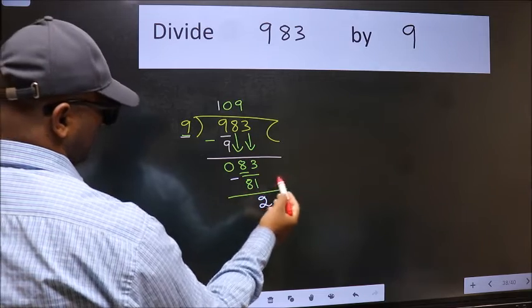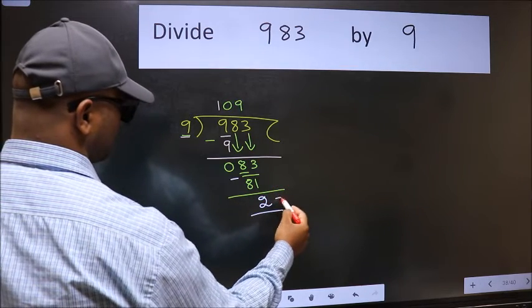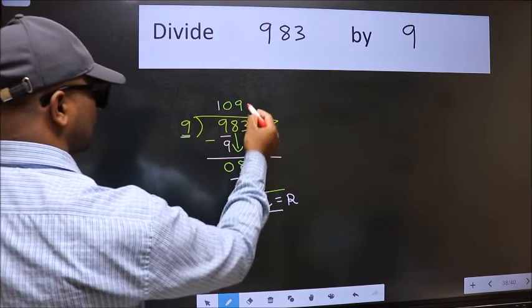No more numbers to bring down. So we stop here. This is our remainder and this is our quotient.